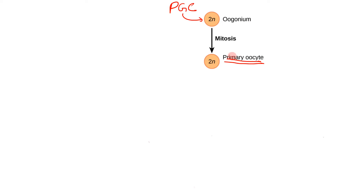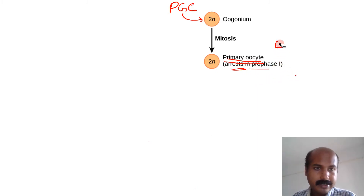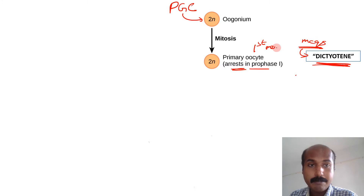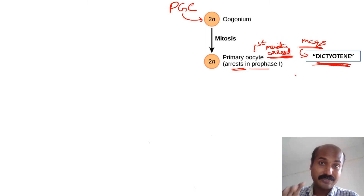The primary oocyte enters meiosis one. Meiosis one contains prophase, metaphase, anaphase, and telophase. Within prophase, the stages are leptotene, zygotene, pachytene, diplotene, and diakinesis. The primary oocyte undergoes a meiotic arrest at the diplotene phase, and this arrested stage is known as dicteotene — an older term but commonly asked in MCQs. This is called the first meiotic arrest.